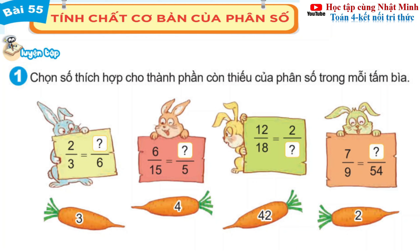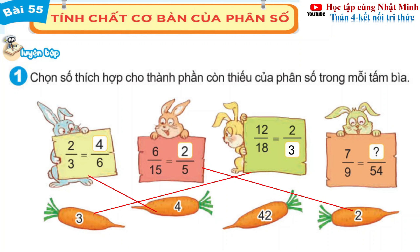Bài 1 phần luyện tập: chọn số thích hợp cho thành phần còn thiếu của phân số trong mỗi tấm bìa. Phép tính đầu tiên: 2 phần 3 bằng 4 phần 6. Tiếp theo 6 phần 15 bằng 2 phần 5. Tiếp theo 12 phần 18 bằng 2 phần 3, vì chúng ta chia cho 6. Tiếp theo 7 phần 9 bằng 42 phần 54.